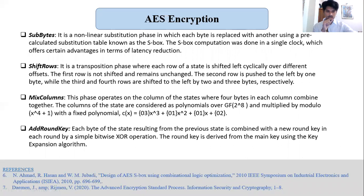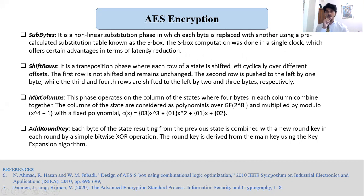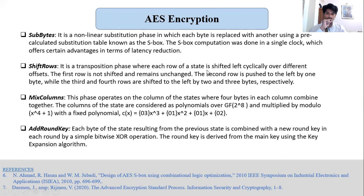Now we'll describe what each of these transformations are. SubBytes is a non-linear substitution phase in which each byte is replaced with another using a pre-calculated substitution table known as the S-Box. The S-Box computation was done in a single clock, which offers certain advantages in terms of latency reduction. ShiftRows is a transposition phase where each row of a state is shifted left cyclically over different offsets. The first row is not shifted and remains unchanged. The second row is shifted to the left by one byte, while the third and fourth rows are shifted by two and three bytes respectively.